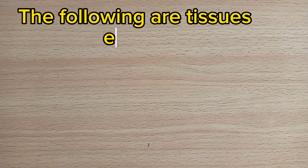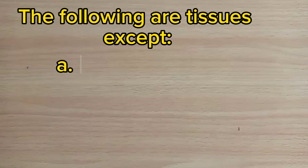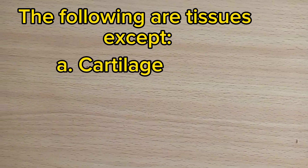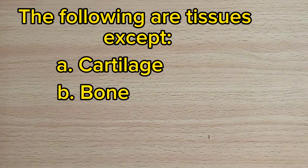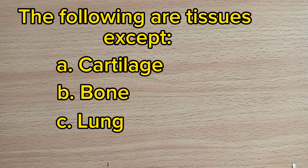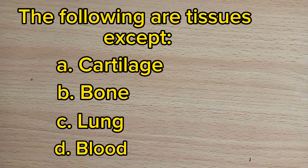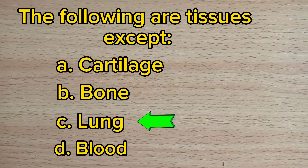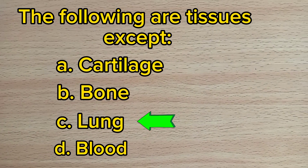Number 3. The following are tissues except: A. Cartilage. B. Bone. C. Lung. D. Blood. Answer: C. Lung.